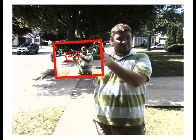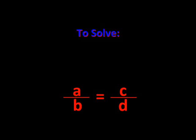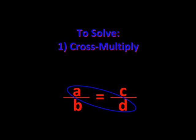So my new photo was 9 inches by 6, and my new triangle was 18 feet high. Proportions are easy once you know how to solve — just remember that you've got to cross multiply and divide.